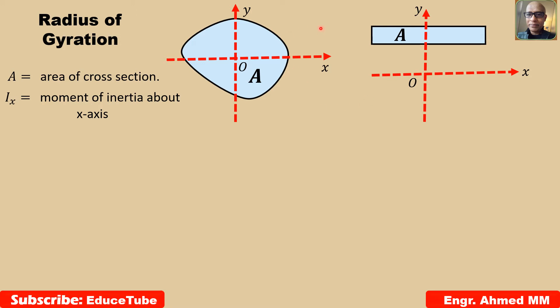If the area A which is concentrated as this one is to have the same moment of inertia with respect to x-axis, then this strip should be placed at a distance kx from the x-axis. Where this kx is defined by the relation. And solving, we can write like this.